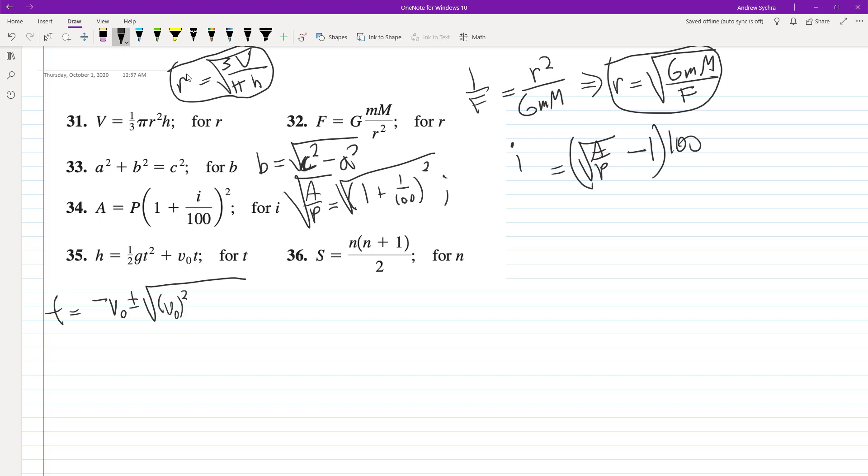So, V₀² - 4 times A, which is 1/2 G, times C, which is -H in this case.